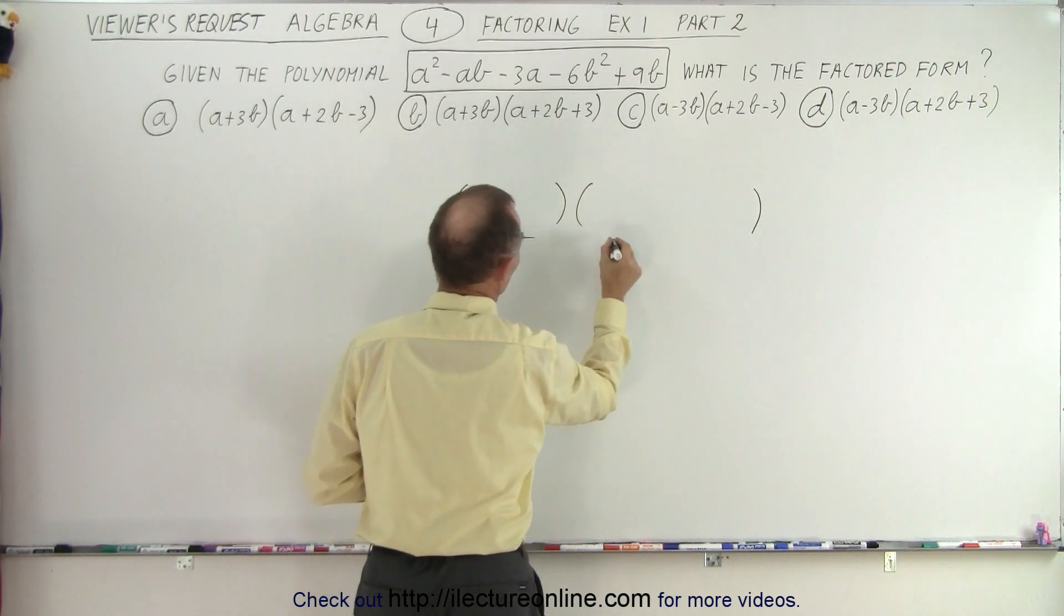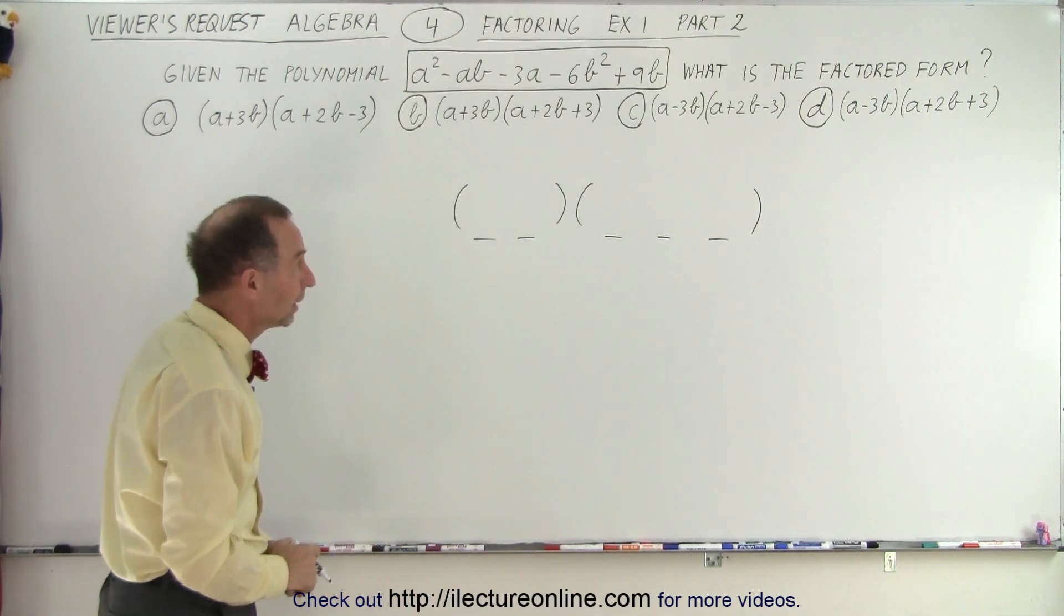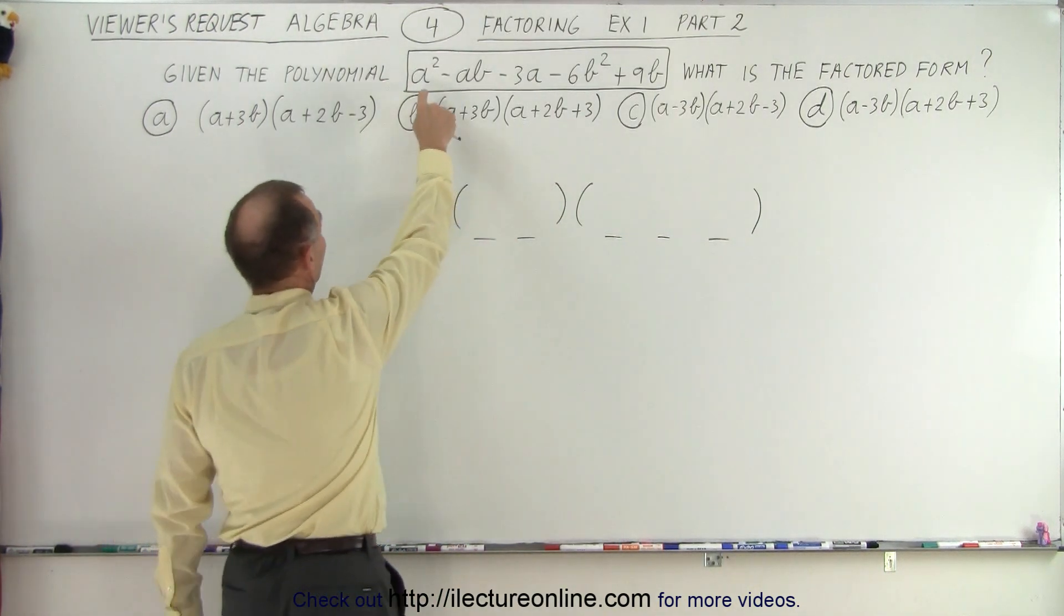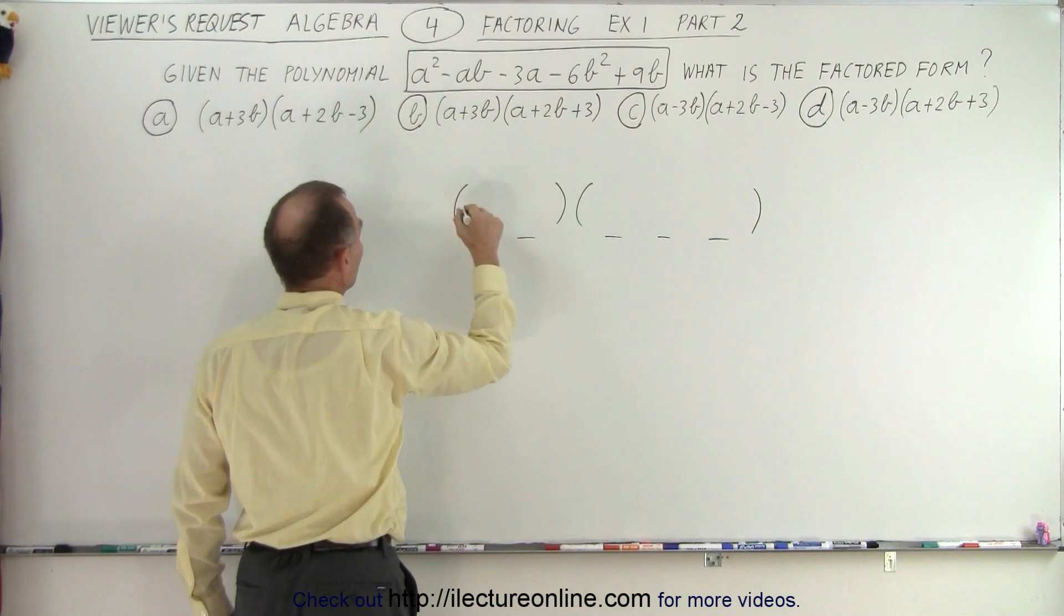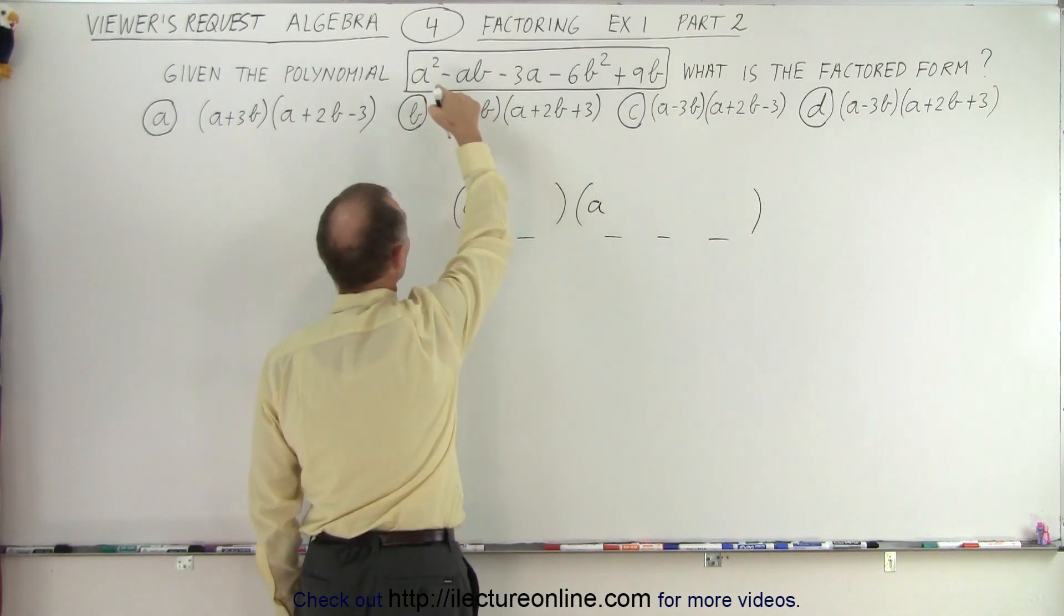So we need one, two terms, one, two, three terms. Alright, so that's a good start. Next, we take a look at the very first term we see in a squared there, which means we need an a here, and we'll need an a there because a times a gives me an a squared.